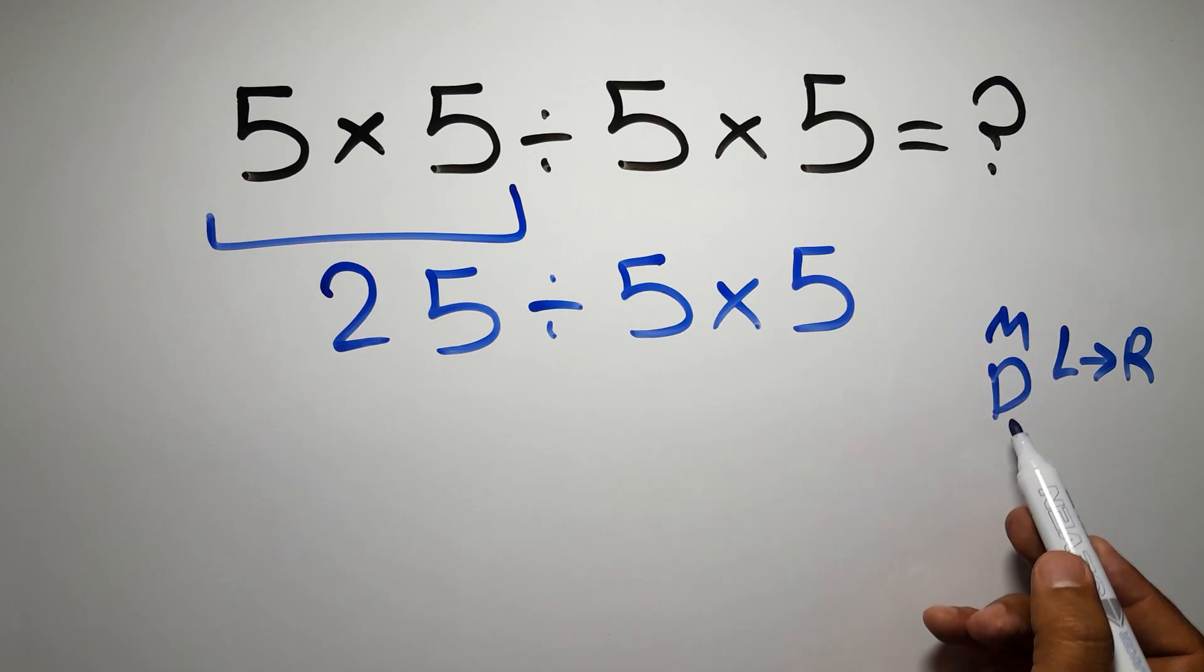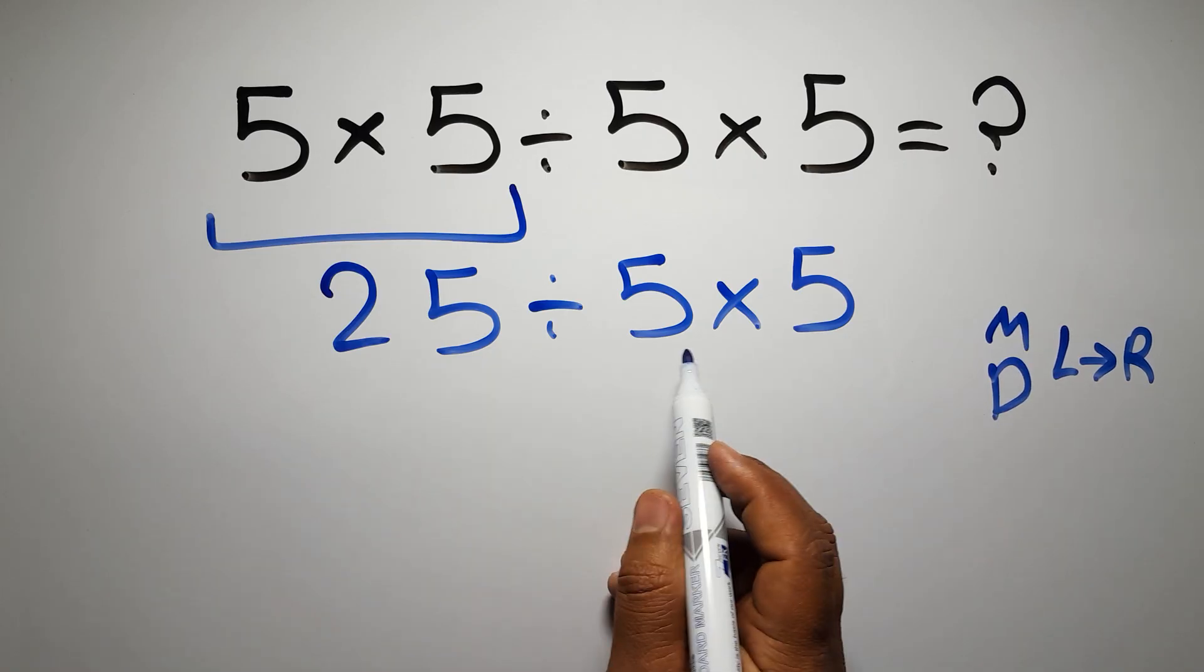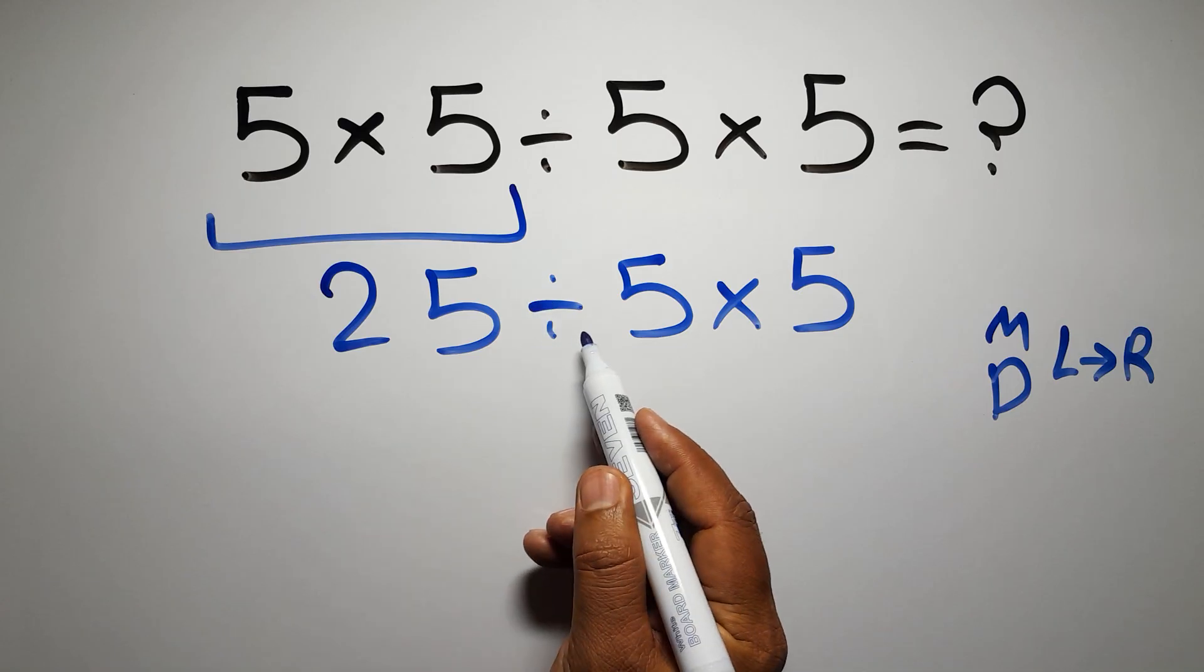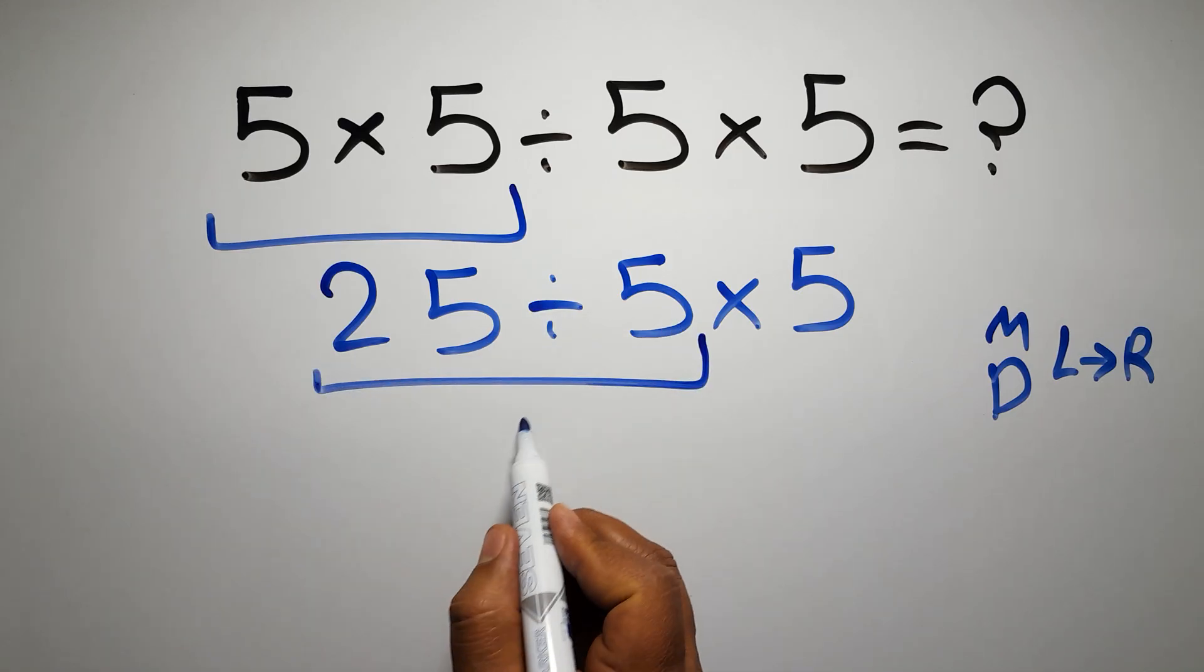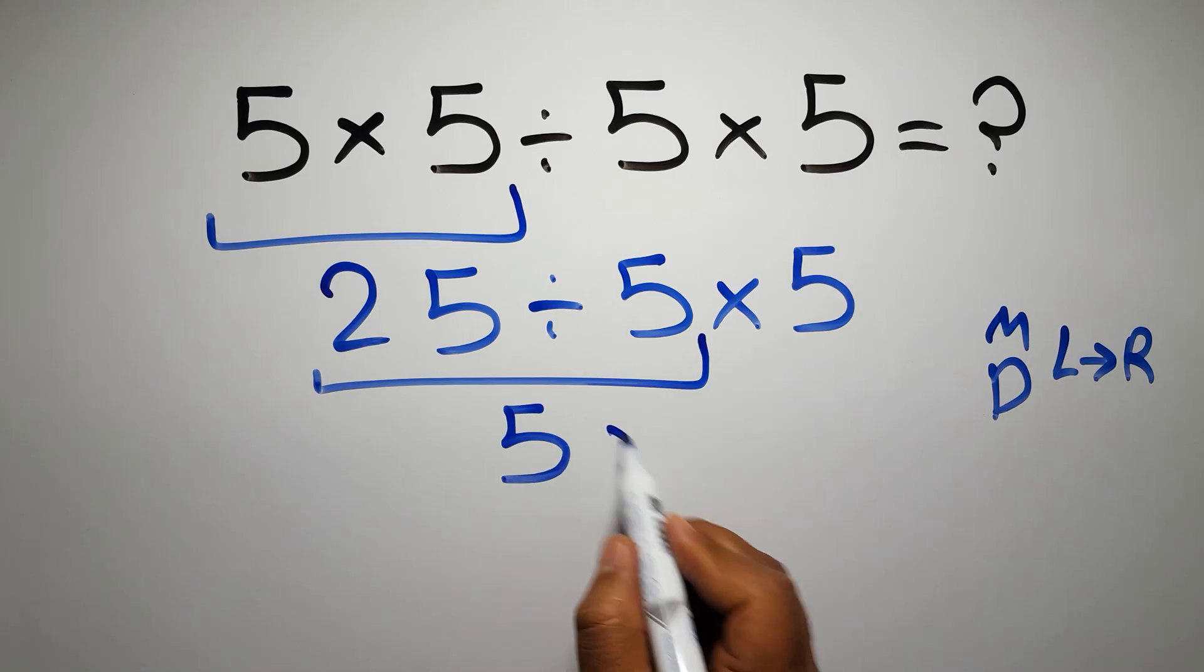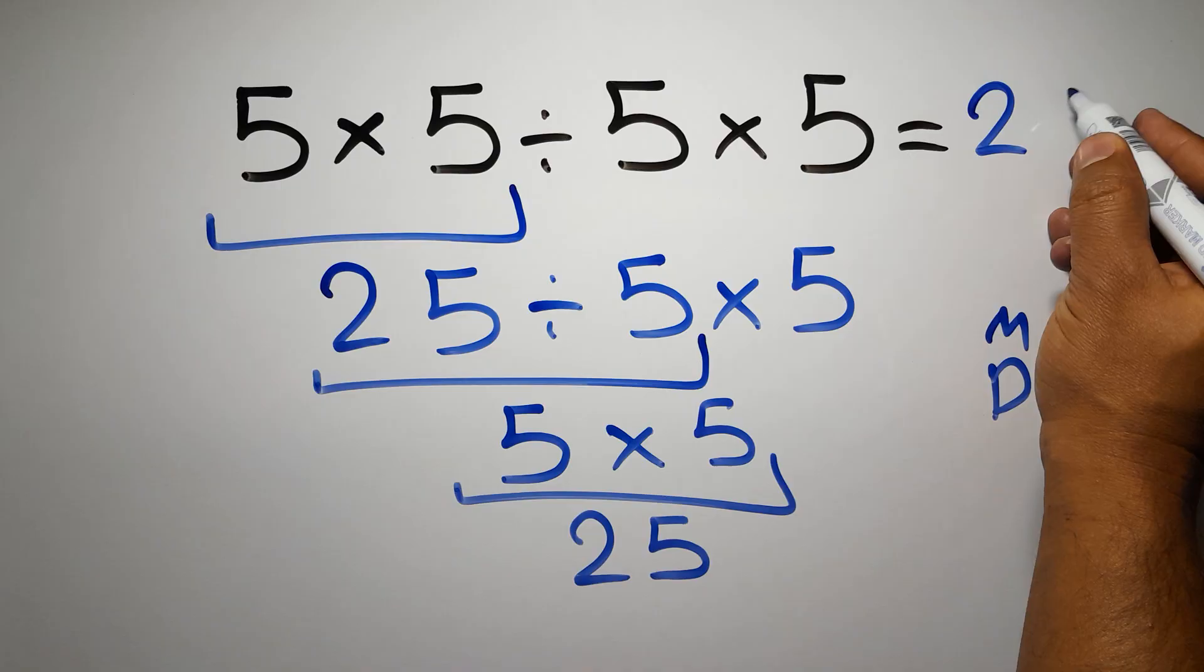As I said, multiplication and division have equal priority, and we have to work from left to right. So here first we have to do this division: 25 divided by 5 is just 5, so 5 times 5, which equals 25. And this is our final answer to this problem, the correct answer is 25.